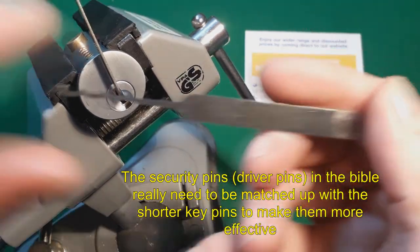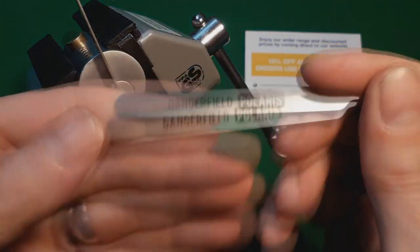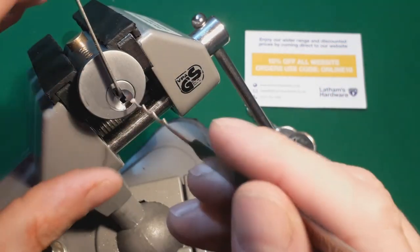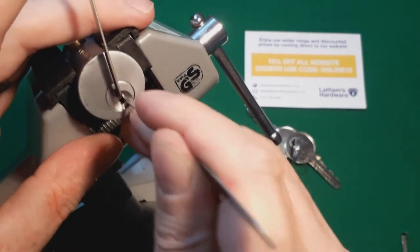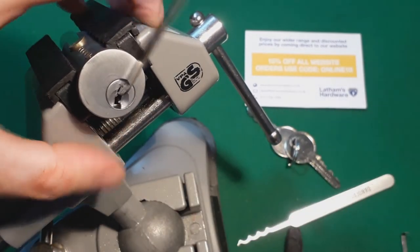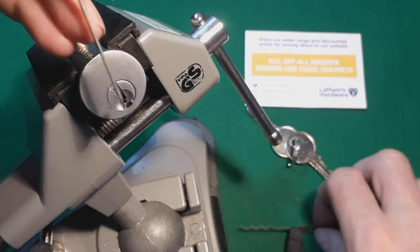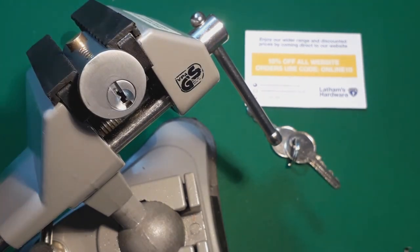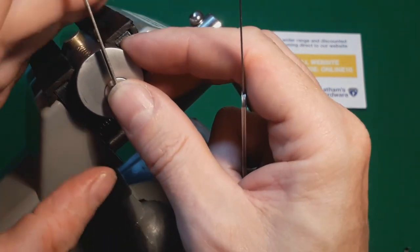So I thought we would try the, this is the Dangerfield Polaris Bogota, so give it a little go with that one as well. A bit of tension, fluctuate the tension, and there we go. That only took a few seconds. So let's try single pin picking this.